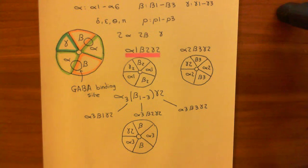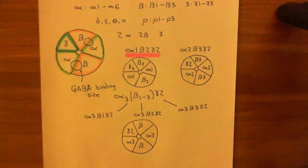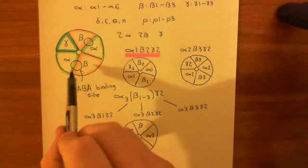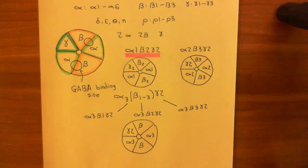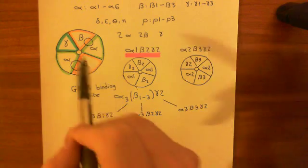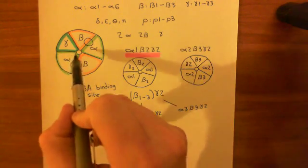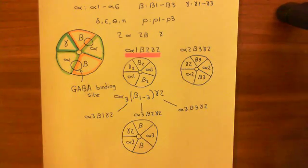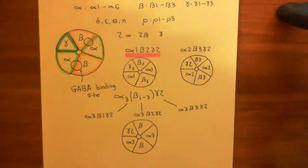In the next video, we'll turn our attention to the pharmacology of these receptors — looking at agonists for the GABA binding site, antagonists for the GABA binding site, and open-pore blockers, which go into the pore when it's open and block it.